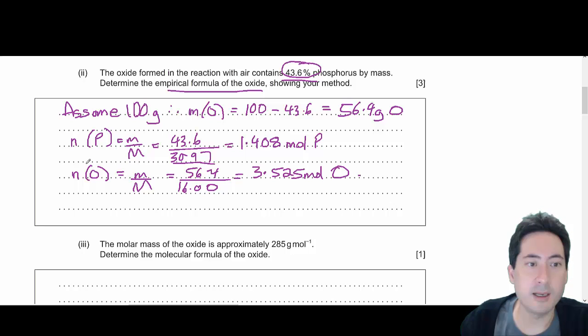All right, and so the formula will be P1.408 oxygen 3.525. All right,